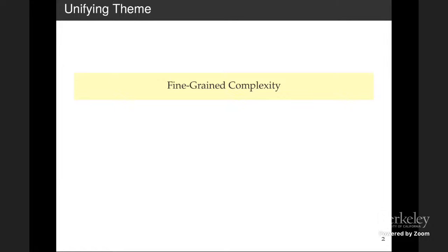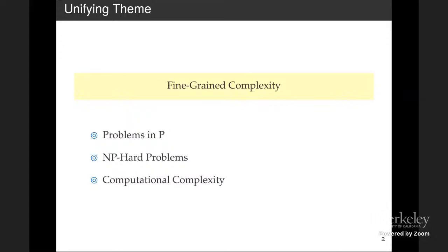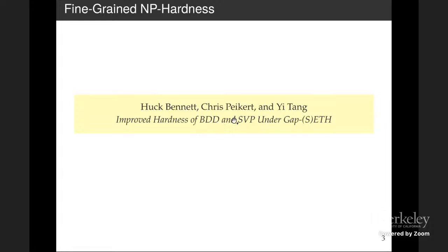In this session, we have an example of each one of these things — problems in P, NP-hard problems, and standard computational complexity questions. The first paper shows there are no better approximation or exact exponential time algorithms for lattice problems. This line of work started about seven years ago, and now we have additional hardness and hardness-of-approximation results for the shortest vector problem and its variants.